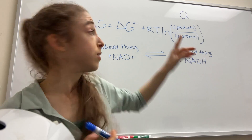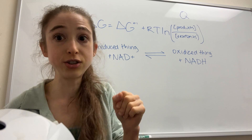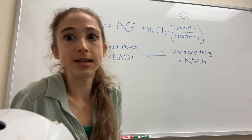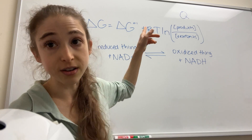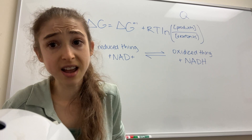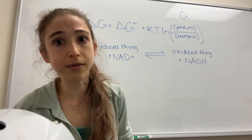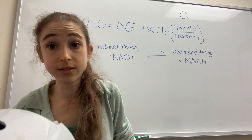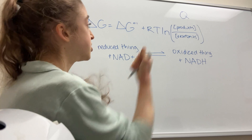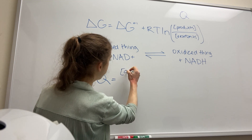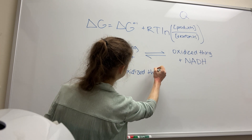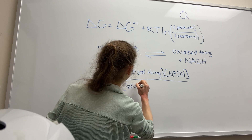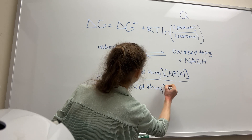We can calculate a delta G-naught prime for this from tables comparing standard reduction potentials. If we're passing electrons from the reduced thing onto NAD+, and NAD+ wants them more, we're going to have something that's favorable — a negative delta G-naught prime. But we also need to take into account the concentrations of our products and reactants: not only the concentration of our reduced and oxidized thing, but also the concentrations of NAD+ and NADH. So our Q equals the concentration of our oxidized thing times NADH, over the concentration of our reduced thing times NAD+.